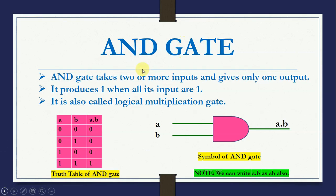AND gate takes 2 or more inputs and gives only 1 output. It produces 1 when all its inputs are 1, and it is also called a logical multiplication gate.